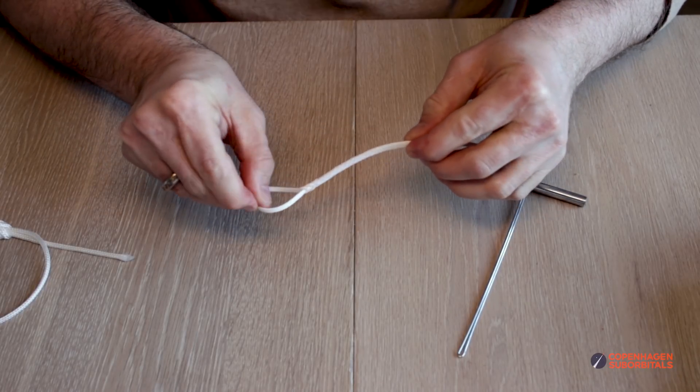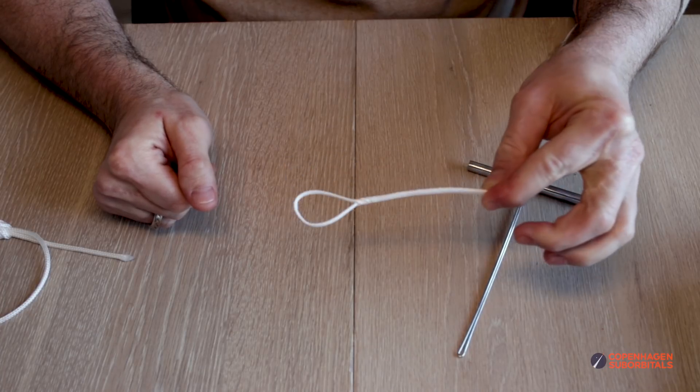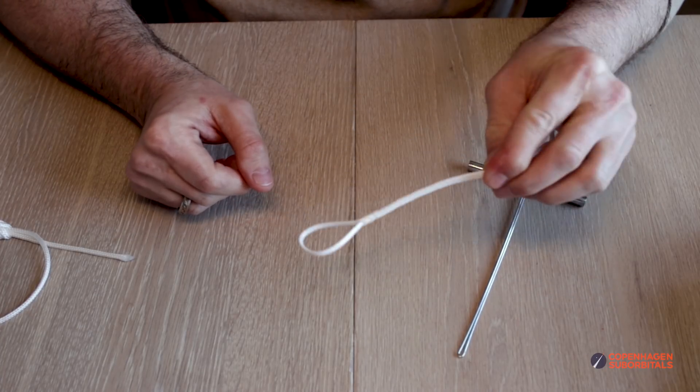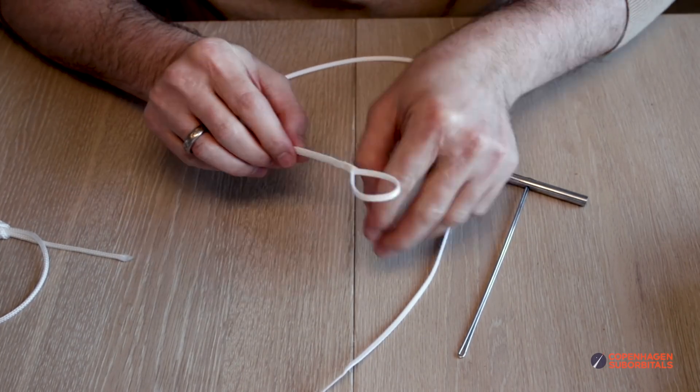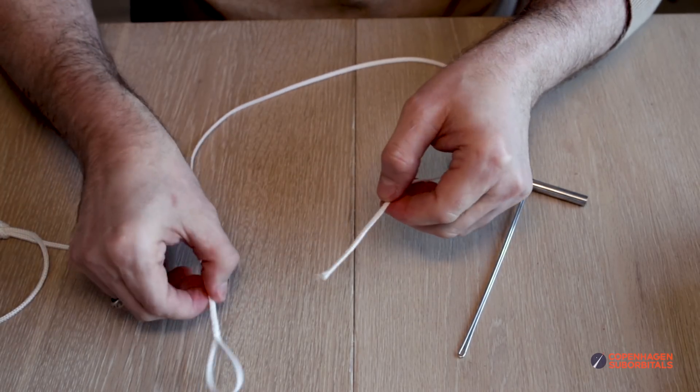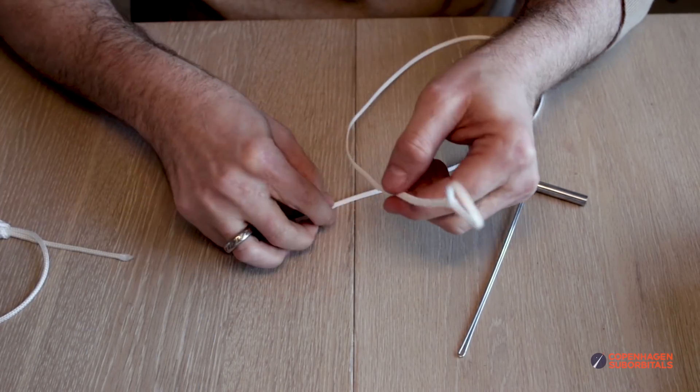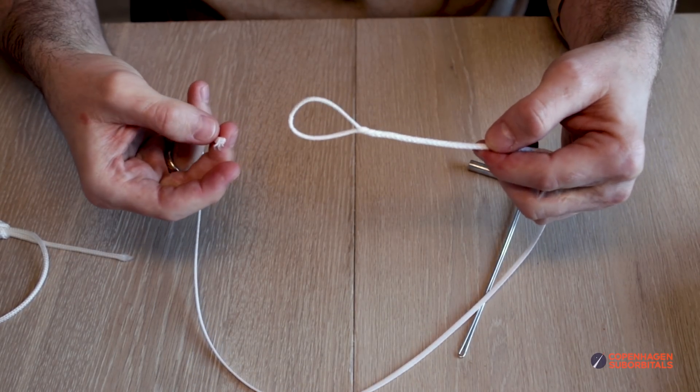And voila, you have yourself a line with an eye in each end—well, in this case just one end. Now we can just do it all over again for this end if you want to, and in the end what we have is basically a line with two eyes that can be used for securing stuff.